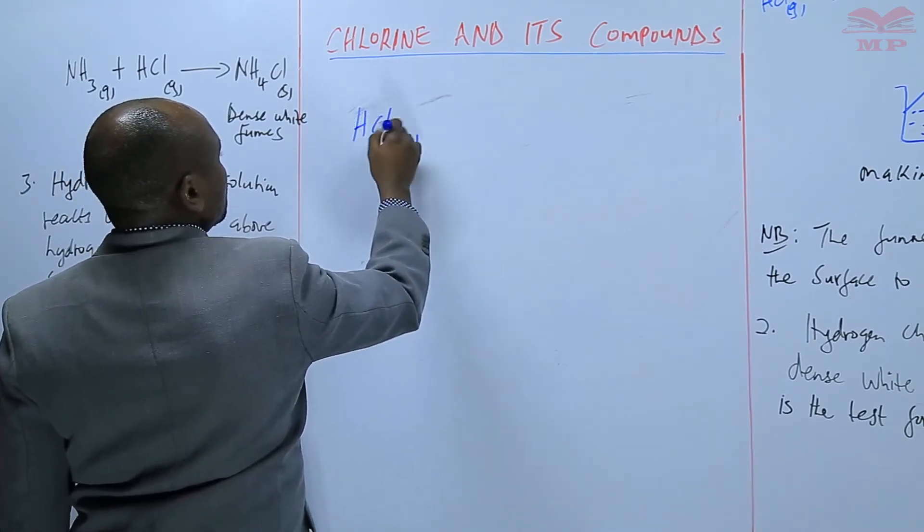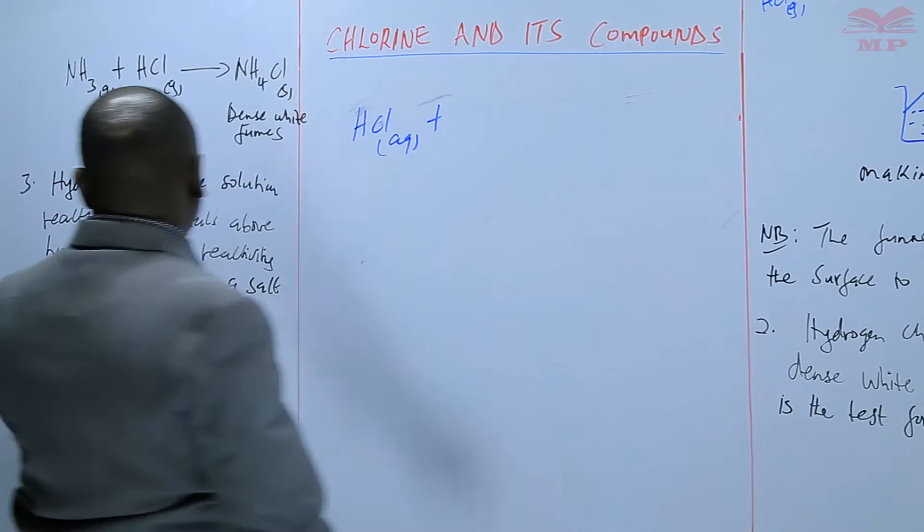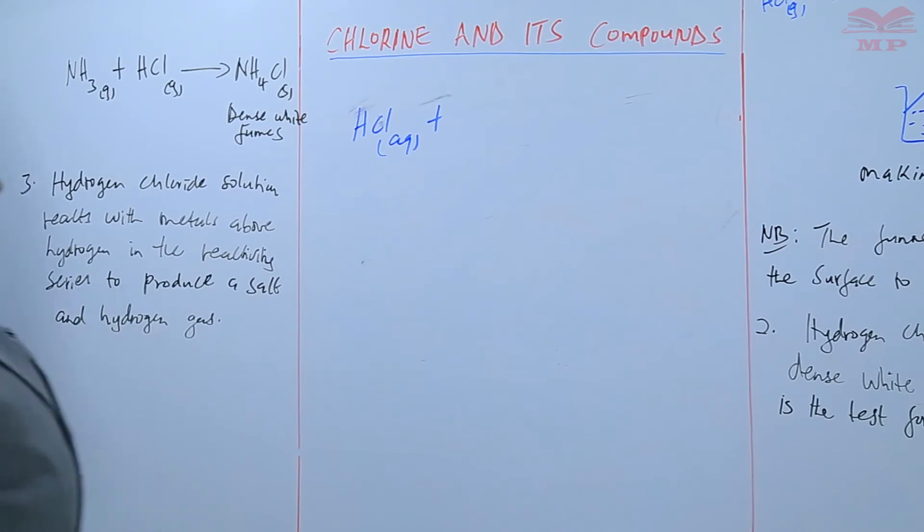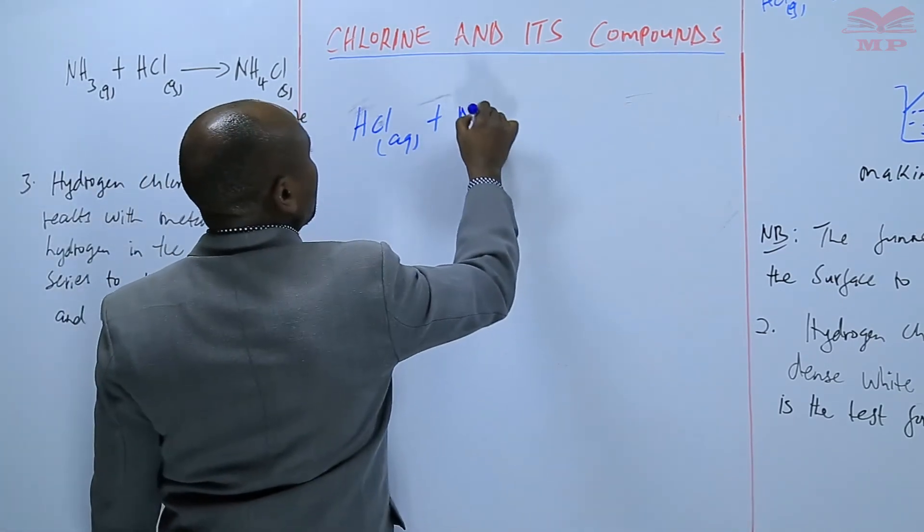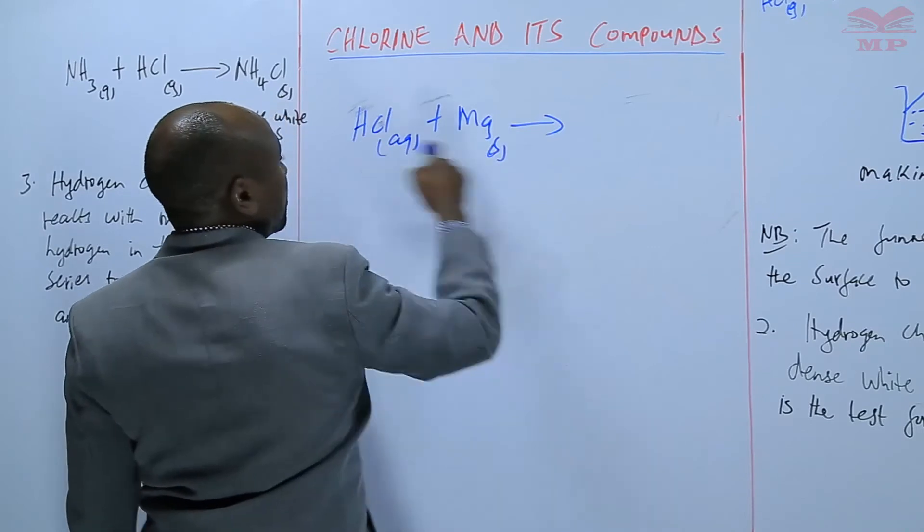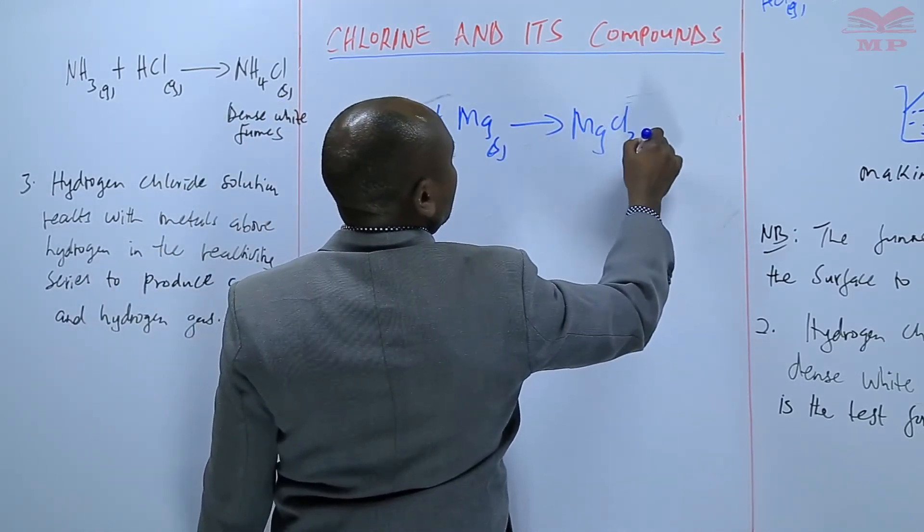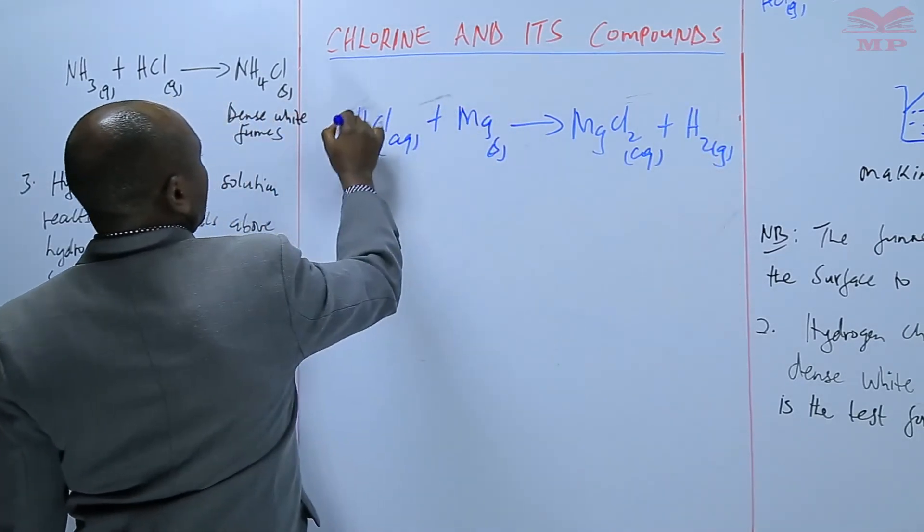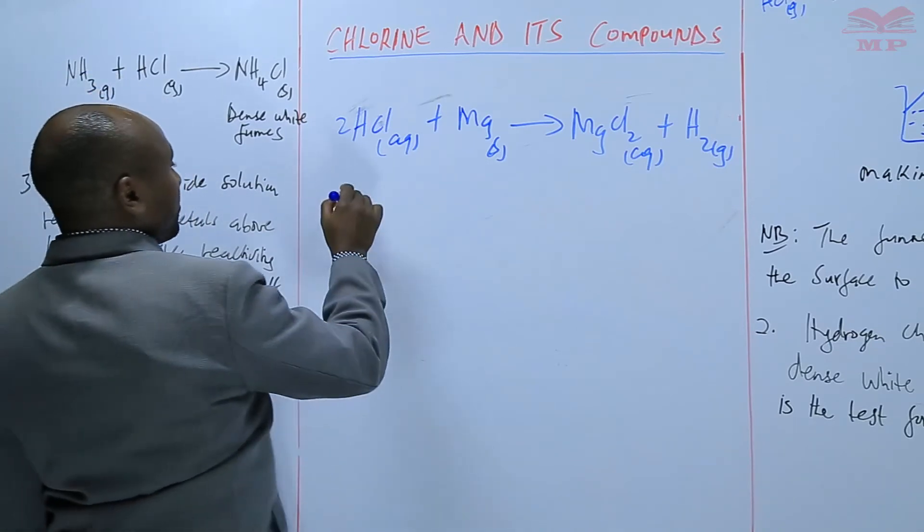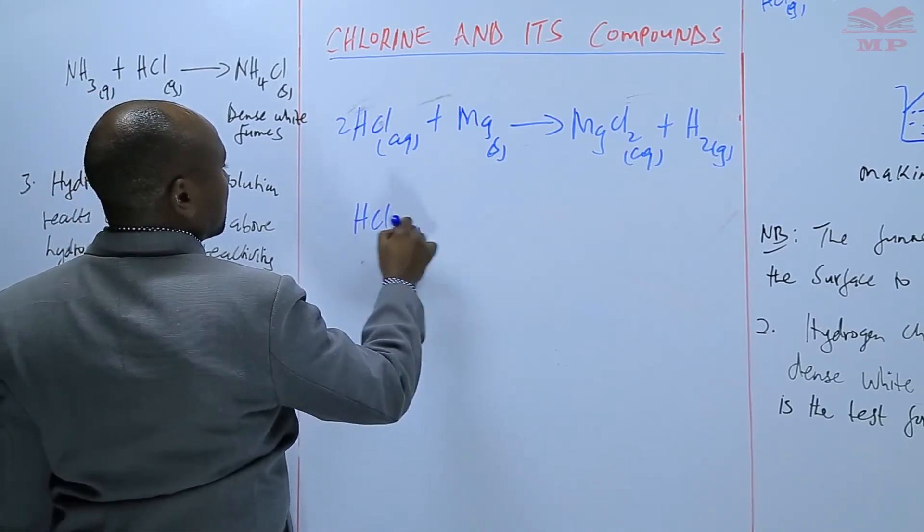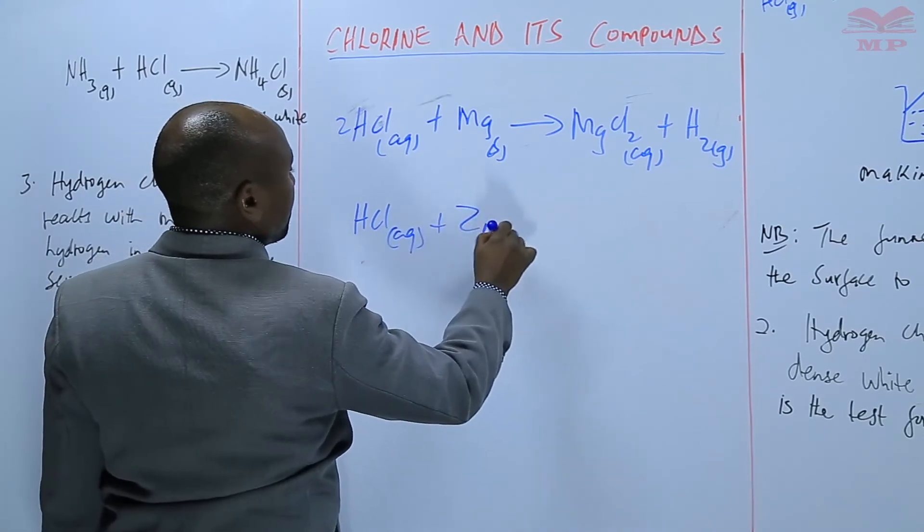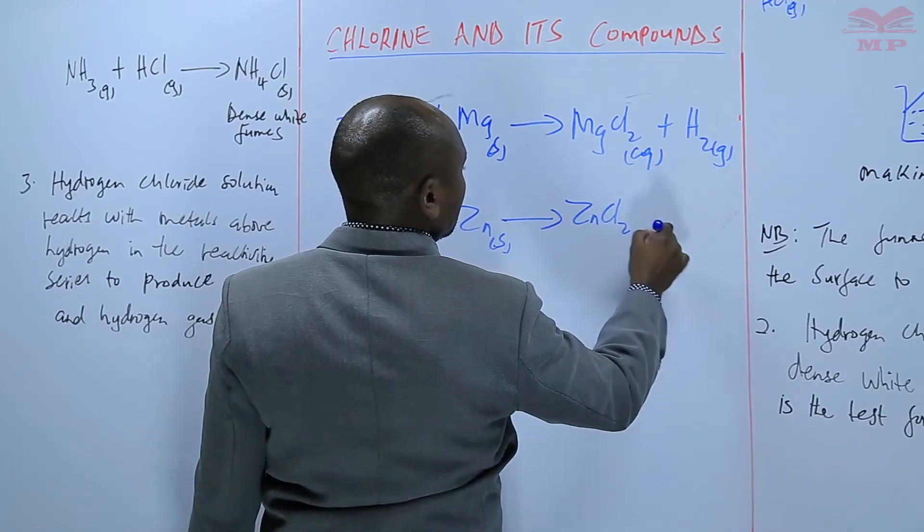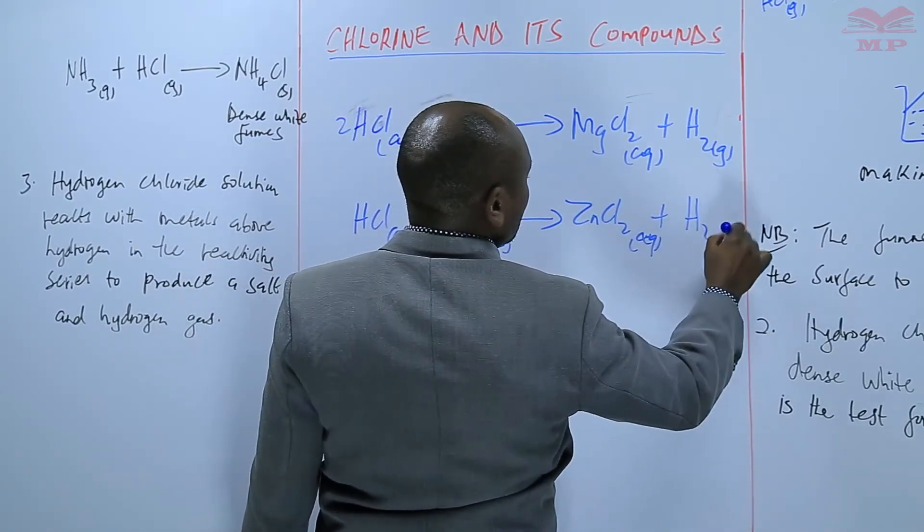So in other words we are saying that HCl solution plus any metal that is above hydrogen in the reactivity series will produce a salt and hydrogen gas. Let's say it's magnesium, get magnesium chloride plus hydrogen gas, balance the equation.